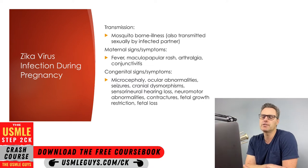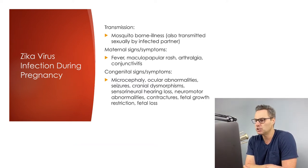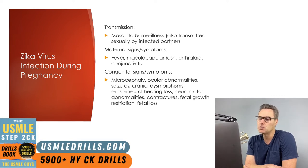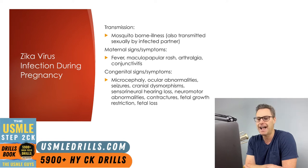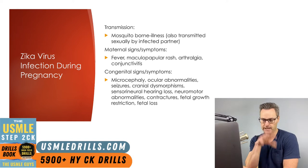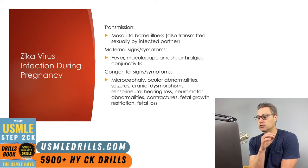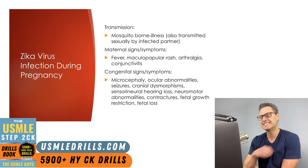Zika virus is known to be transmitted via mosquito bites and also via sexual intercourse with infected individuals. Zika virus is found most prevalently in Mexico, Central America, South America, and the Caribbean, as well as parts of Southeast Asia, Oceania, and parts of Africa. There have been reports of spread here in the U.S., specifically Texas and Florida, but generally patients at risk for Zika virus infection during pregnancy are those who have traveled to an endemic area.